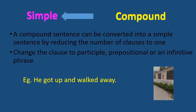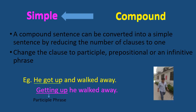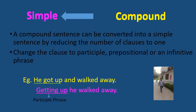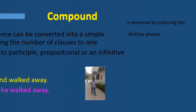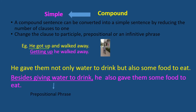For example: 'He got up and walked away.' We can change the coordinate clause 'got up' into a participle: 'Getting up, he walked away.' Another example: 'He gave them not only water to drink, but also some food to eat.' Using a prepositional phrase: 'Besides giving water to drink, he also gave them some food to eat.'